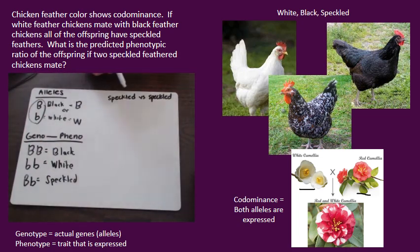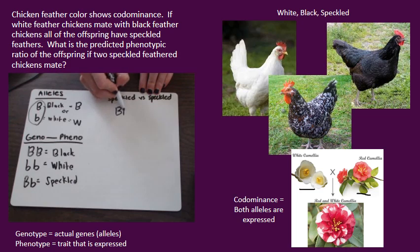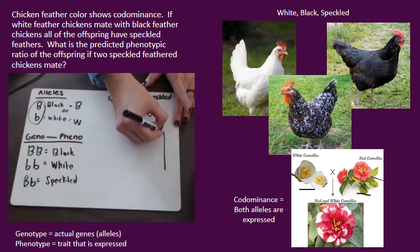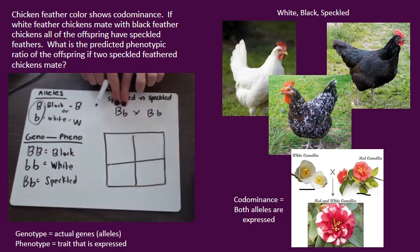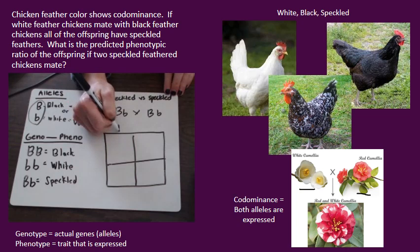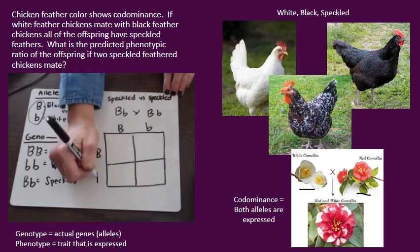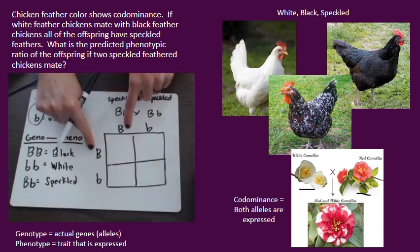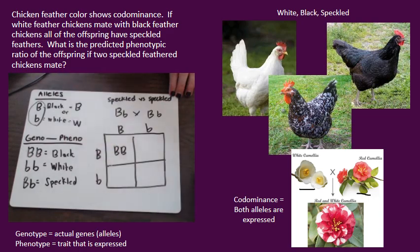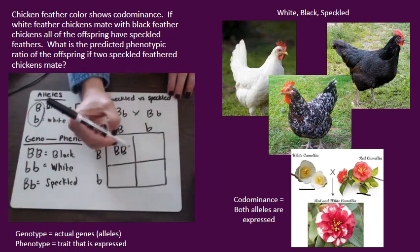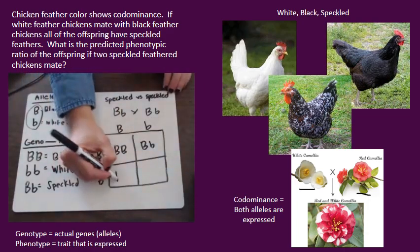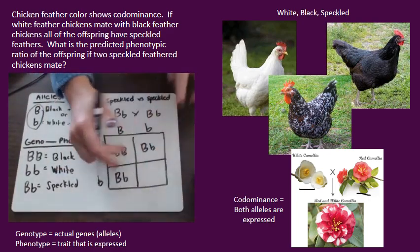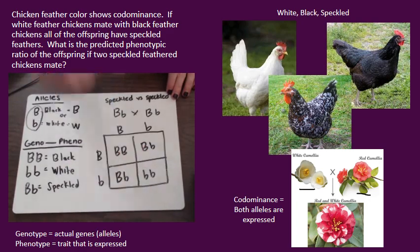Now we're going to set up our genetics cross. We have two speckled chickens mating. Let's do our Punnett square. Remember, each parent is going to be split up into two possible gametes. Line them up on the side. If these two gametes fuse, we get homozygous for the black allele — BB. If these two fuse, we get a heterozygote. If these two fuse, heterozygous again. And if these two fuse, homozygous for the white allele — bb.